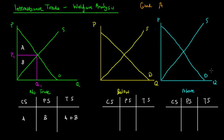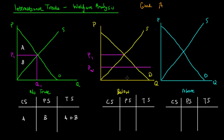Now we're going to look at the second scenario when there is international trade, and the international trade price is below the equilibrium price. The equilibrium price of the market without international trade is P1. However, with international trade, the world price — we'll call it PW — is at PW. This price is constant because we assume this is a very large world market and we don't have enough power to affect the price in the world market.